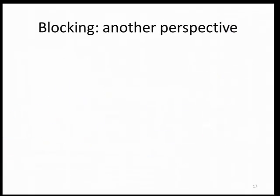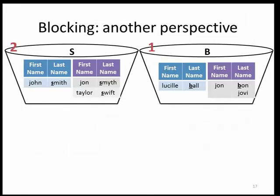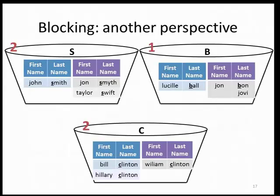Blocking can also be viewed as a space partitioning problem. You sort the records into separate buckets based on the blocking variable — here the first letter of the last name — and within each bucket you do a mini record linkage. All records where the last name starts with S require two record pair comparisons within the S bucket, the B bucket requires one, and the C bucket requires two record pair comparisons.